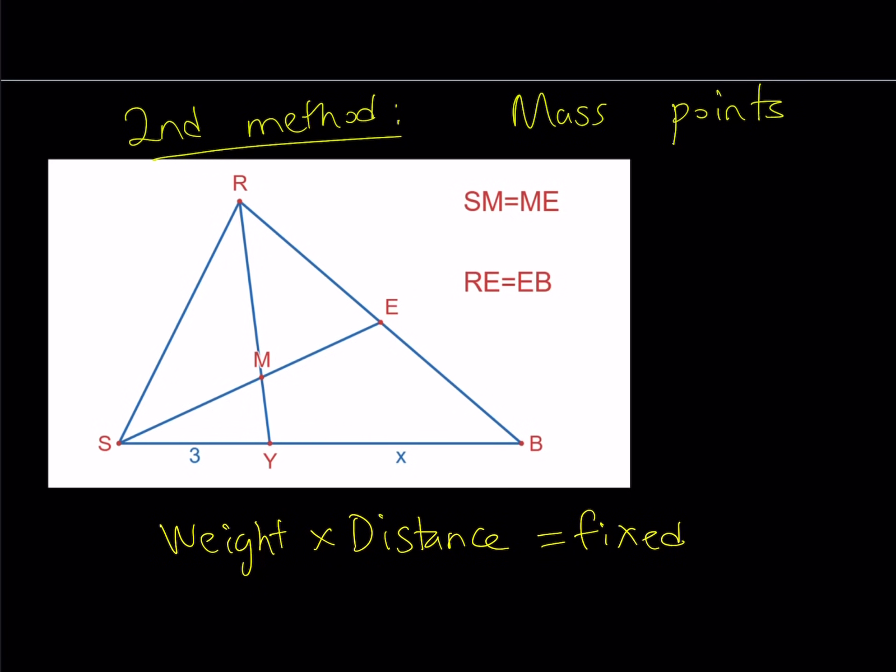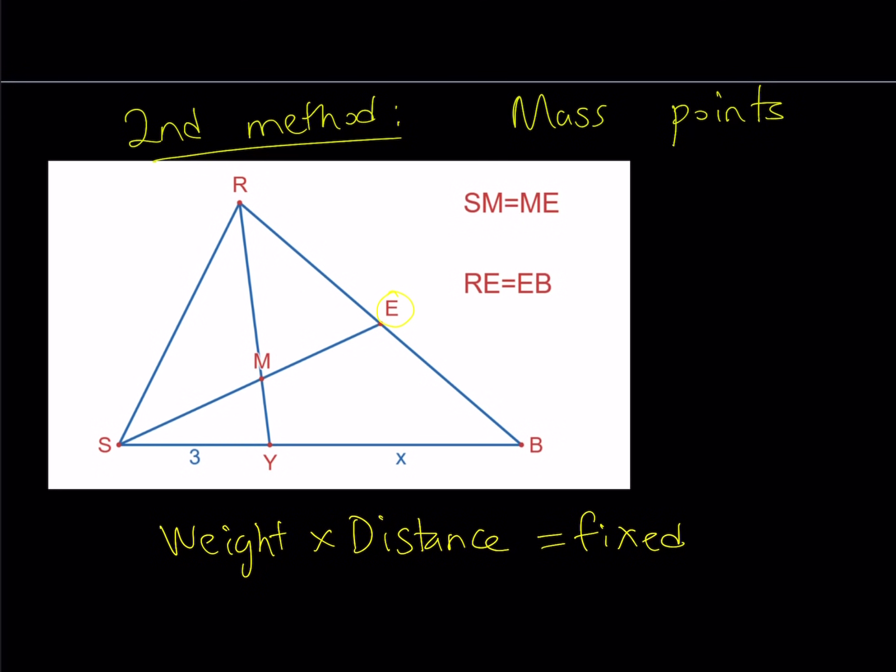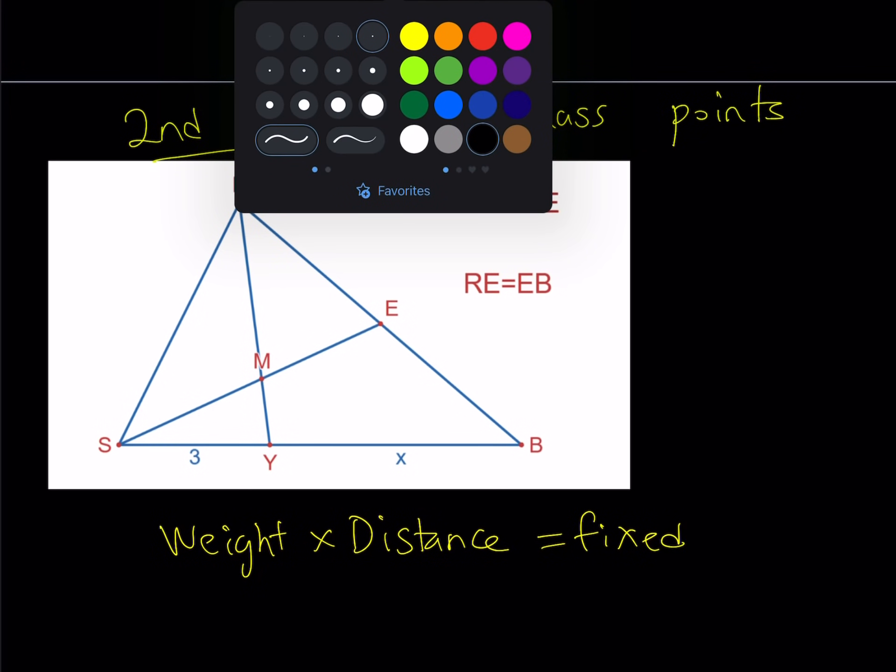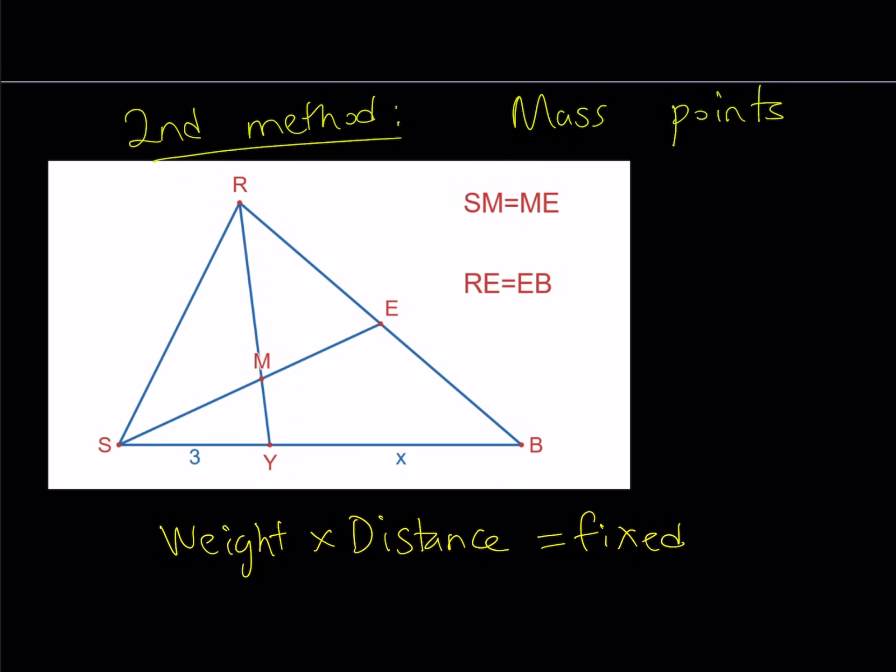We always have to make sure that weight 1 times distance equals weight 2 times distance. So weight times distance is going to be fixed on a line segment. We're going to start by assigning weights to each vertex. We're going to start at the outer vertices. And then here's another rule. When you have a segment like RB, and we know that E is on RB, E is in the middle basically, that means that the weight at R and B will be added, and you're just going to assume that all the weight is accumulated at E.